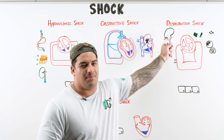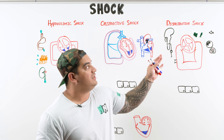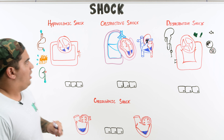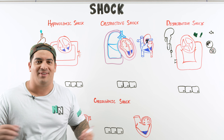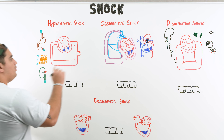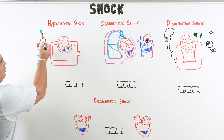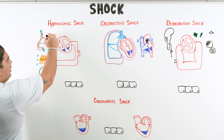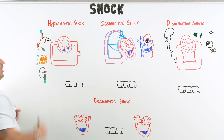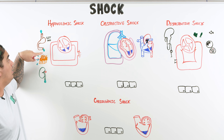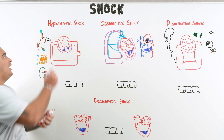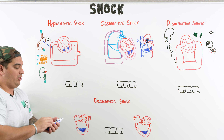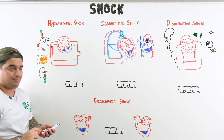Each of these will have separate lectures in more detail. First: hypovolemic shock. Hypovolemic shock is simple — the volume within your vascular system is significantly reduced. You can lose volume in two ways. One is from GI losses: vomiting from the top, diarrhea from the bottom, excessive NG tube suctioning, or very poor PO intake. If fluid isn't absorbed across the GI tract, you're not absorbing volume, so your blood volume drops.